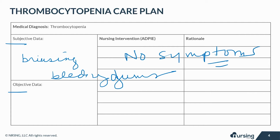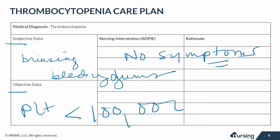Objective data includes petechiae or purpura, abnormal vaginal bleeding, epistaxis, or a platelet count on CBC of less than 100,000.